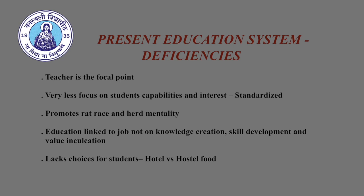This has led to rat race and herd mentality among students. As today, students focus on replicating the success stories of past, forgetting the fact that environment is very dynamic and things may not be the same as they were in the past. Another major deficiency is linking of education to job, keeping aside the core essence of education — that is knowledge creation, skill development, and value inculcation. Today's students have very little choice in terms of selecting their subjects after opting for a particular program or degree. It is like a hostel mess where one has to eat only what is served, unlike a hotel where one has the option to select what one wants to eat.